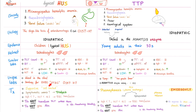Treatment summary: HUS is self-limited — supportive care. For symptomatic uremia, dialysis; for anemia, red blood cells. Do not give platelets. Do not give antibiotics. TTP is a medical emergency — plasmapheresis with plasma exchange. If hemoglobin is low, give red blood cells. Do not give platelets. Do not give antibiotics. If the patient does not respond to plasma exchange, try steroids and rituximab.